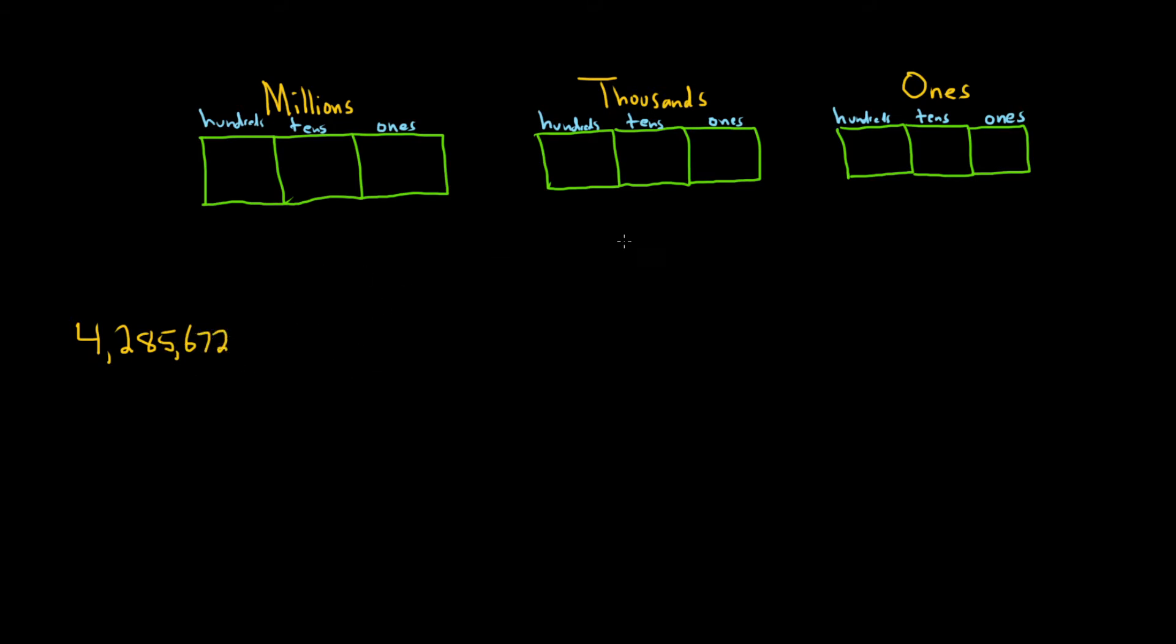And what you could do is you could put the number in these boxes. So we would write it like this: 2, 7, 6, 5, 8, 2, and then here we have 4.